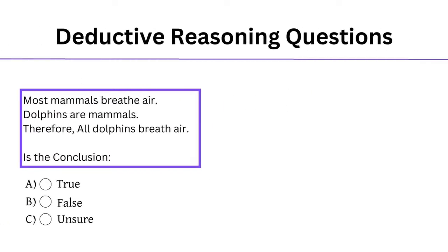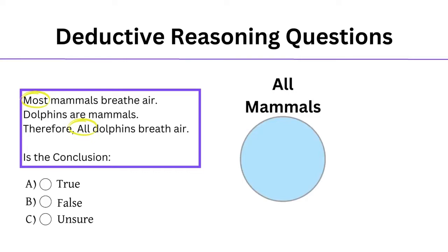Our second question has key words to focus on. These words indicate that the test is trying to trick you, so always check for words like all, none, or some. Again, we will use visuals, but this time we'll use a Venn diagram. Most mammals breathe air, so our first circle is all mammals, and the second overlapping circle will be breathing air.